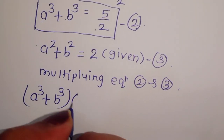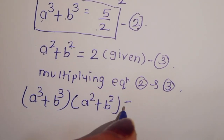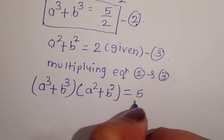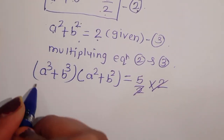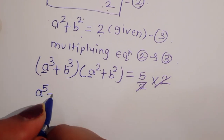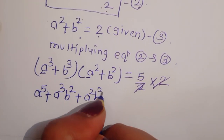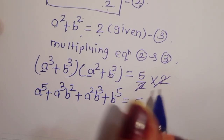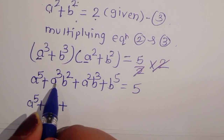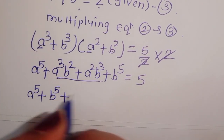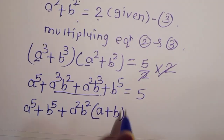Multiplying equation 2 and equation 3: (a cube plus b cube) into (a square plus b square) is equal to 5 upon 2 into 2. This gives us a power 5 plus a cube b square plus a square b cube plus b power 5. We can take common a square b square from the middle terms, giving a power 5 plus b power 5 plus a square b square into (a plus b) is equal to 5.